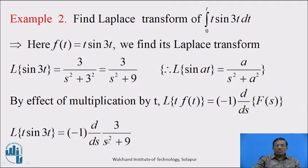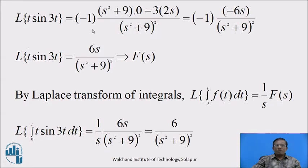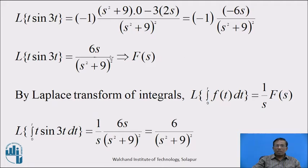We differentiate 3 upon s square plus 9 with respect to s using the quotient rule. We get minus 1 as it is; keeping s square plus 9 in the numerator, derivative of numerator 3 is 0, minus numerator 3 and derivative of denominator is 2s, divided by (s square plus 9) squared. This equals minus 1 into minus 6s divided by (s square plus 9) squared. Therefore, Laplace transform of t into sin 3t equals 6s upon (s square plus 9) squared. Denote this result by F of s.